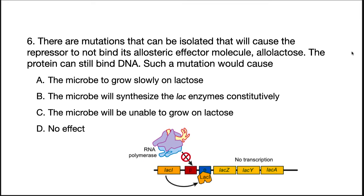So, if you can't bind the allosteric effector, what happens? The correct answer here is C. The mutation alters the allosteric site on LACI, the LACI repressor, so that it cannot bind its effector allolactose. Therefore, LACI is still active — it just can't bind the molecule that shuts it off. So it's always going to be active, it's always going to bind to its site and block RNA polymerase. Therefore, the microbe would be unable to grow on lactose because RNA polymerase wouldn't transcribe the operon.